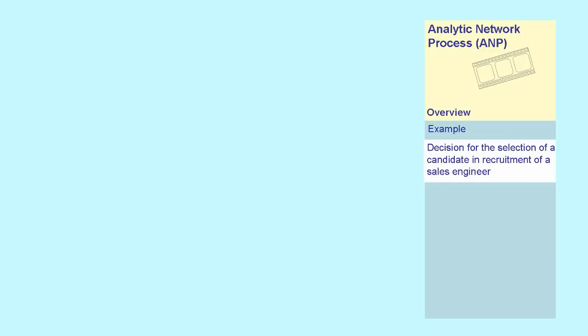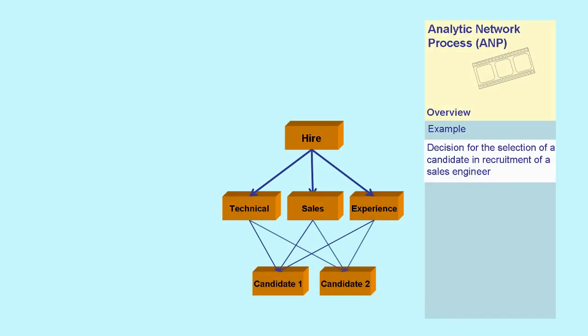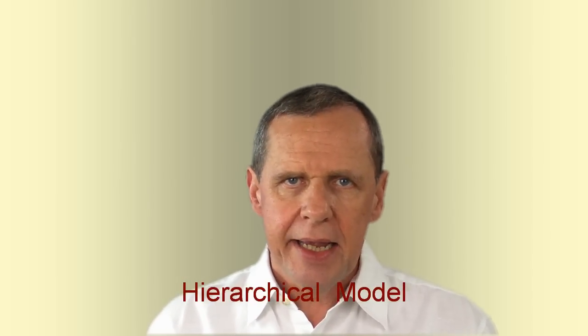As an example, we use the decision for the selection of a candidate in hiring a sales engineer. Criteria are technical skills, sales skills, and experience. We want to select one out of two potential candidates. The problem can be described in a hierarchical model with AHP as well as in a network model with ANP.